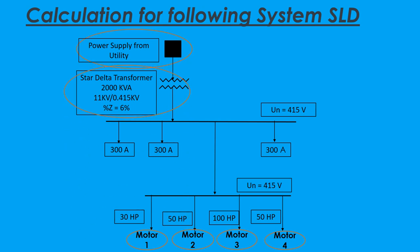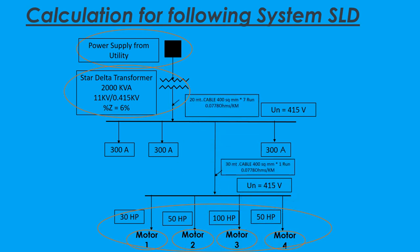This system consists of a source of 11 kV and a transformer of 11 kV by 0.415 kV. The system consists of four numbers of motors connected as load, operating at 415 V. For power transmission, seven runs of 20 m 400 sq. mm cable and one run of 30 m 400 sq. mm cable are used. We will calculate fault current for Point No.1, Point No.2, and Point No.3.